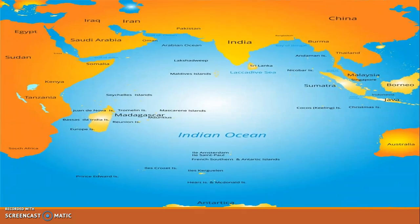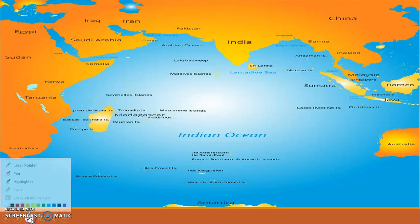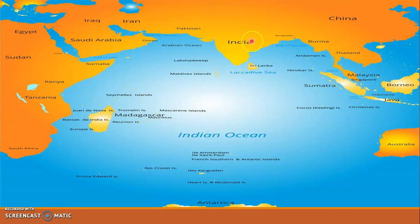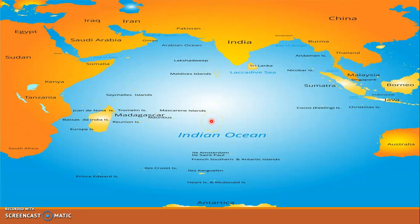Where is the Indian Ocean exactly located? The Indian Ocean is located below our country India. It is the only ocean in the world which is named after a country. We know that there are different oceans like the Pacific Ocean, Atlantic Ocean, Southern Ocean, and Arctic Ocean, but none of them are named after any country. The Indian Ocean is uniquely named after the country India.